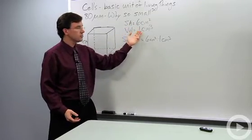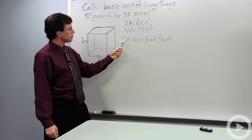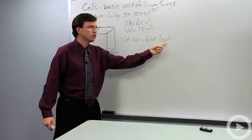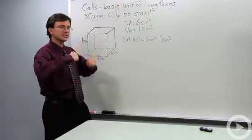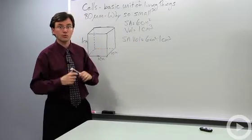If we calculate its volume, we find that it is one cubic centimeter. So if we look at the ratio here, we have a surface area to volume ratio of six to one. That means every one cubic centimeter cell is able to suck in materials through six centimeters worth of skin or membrane.